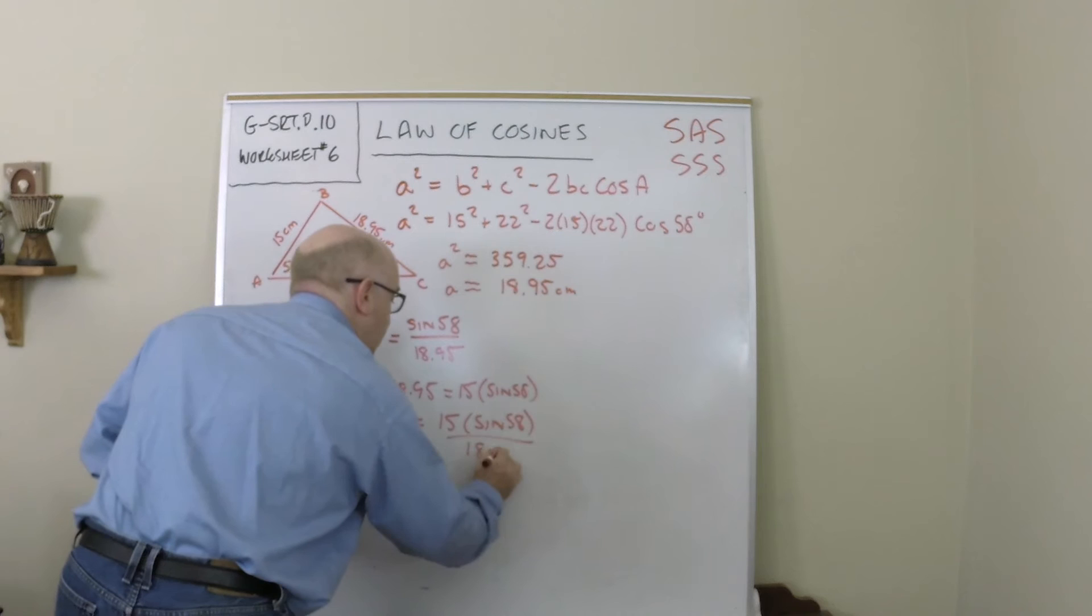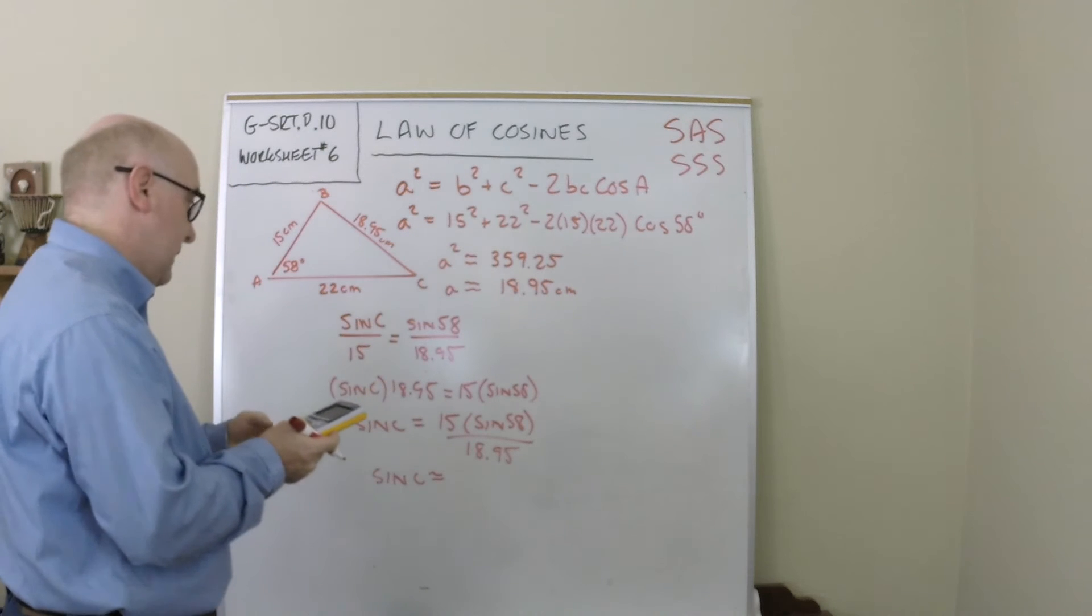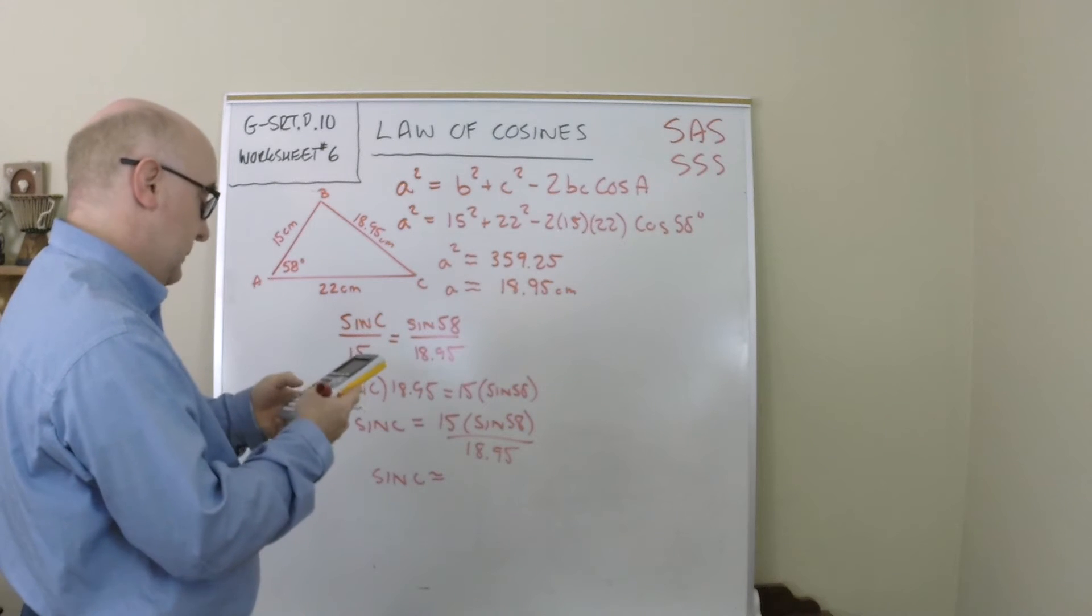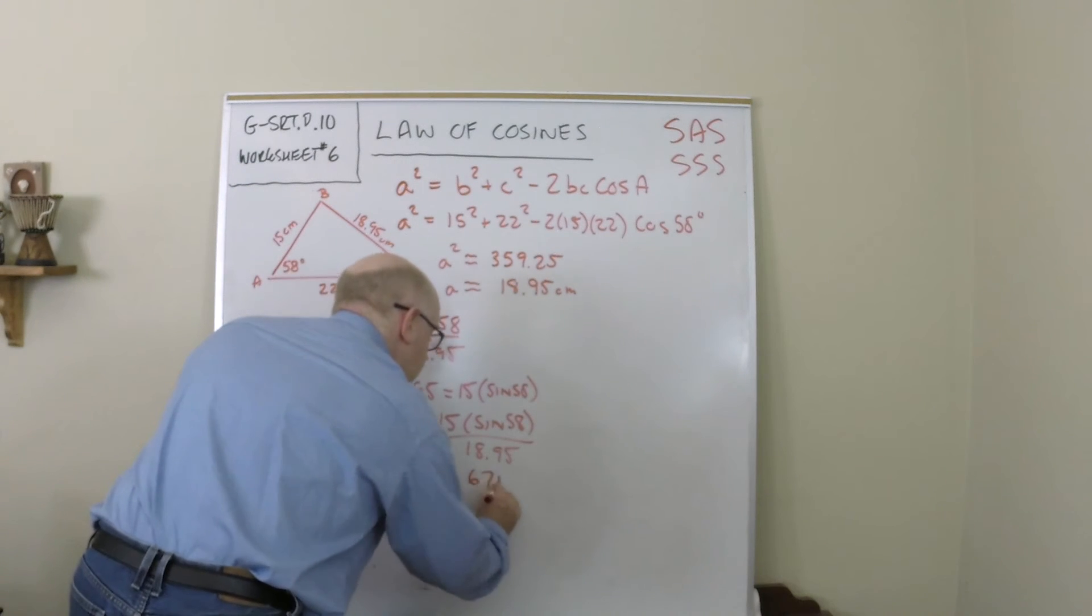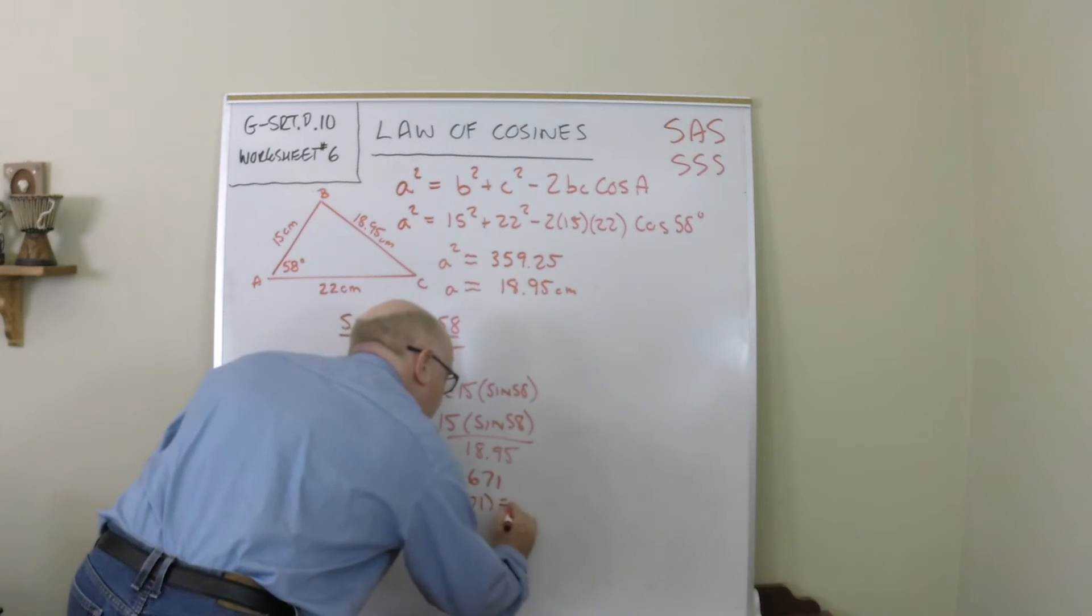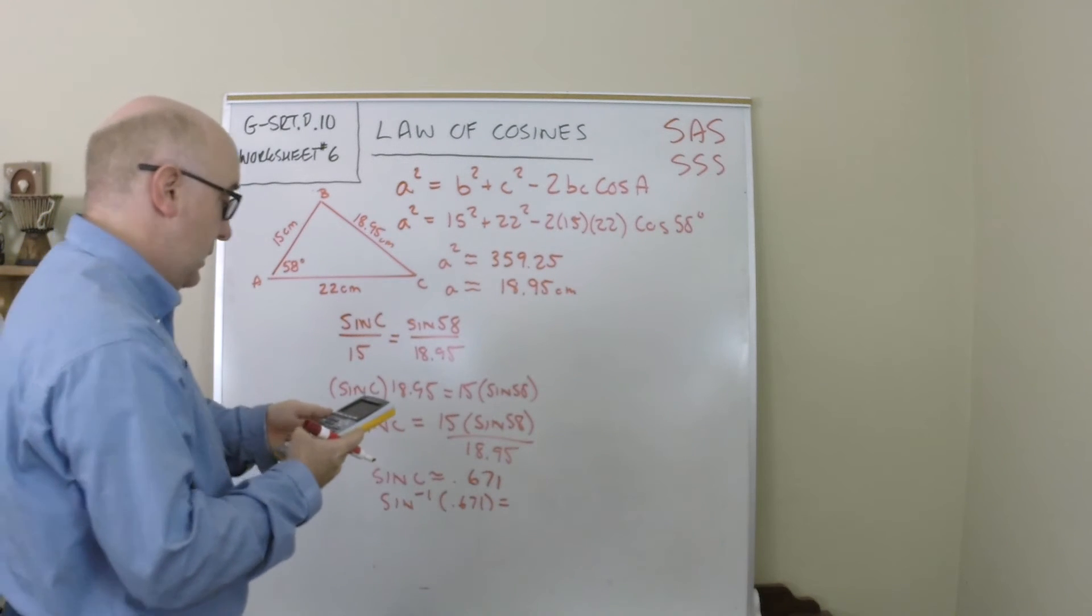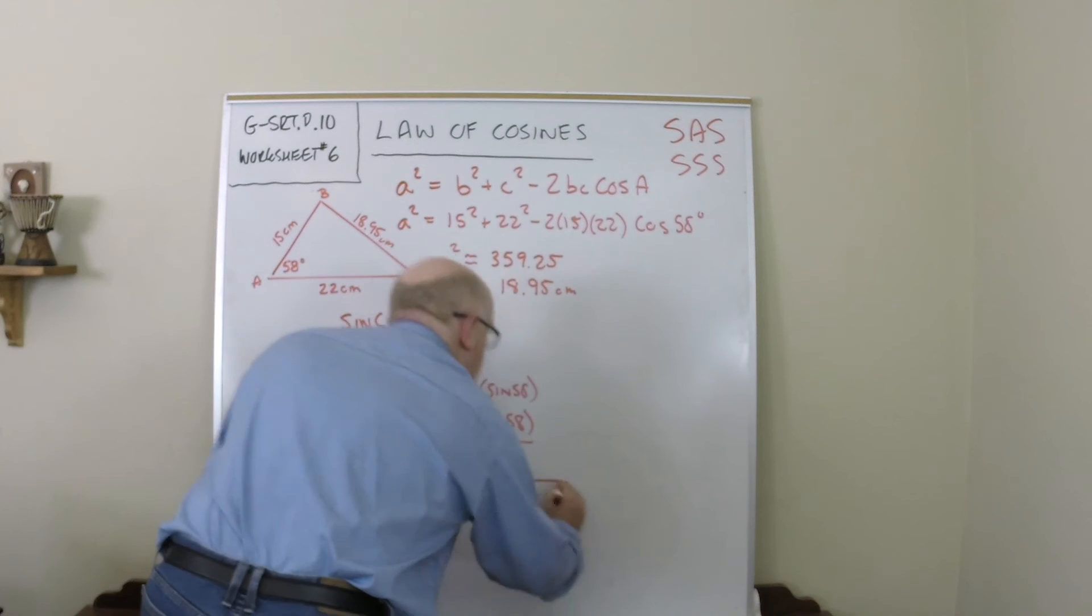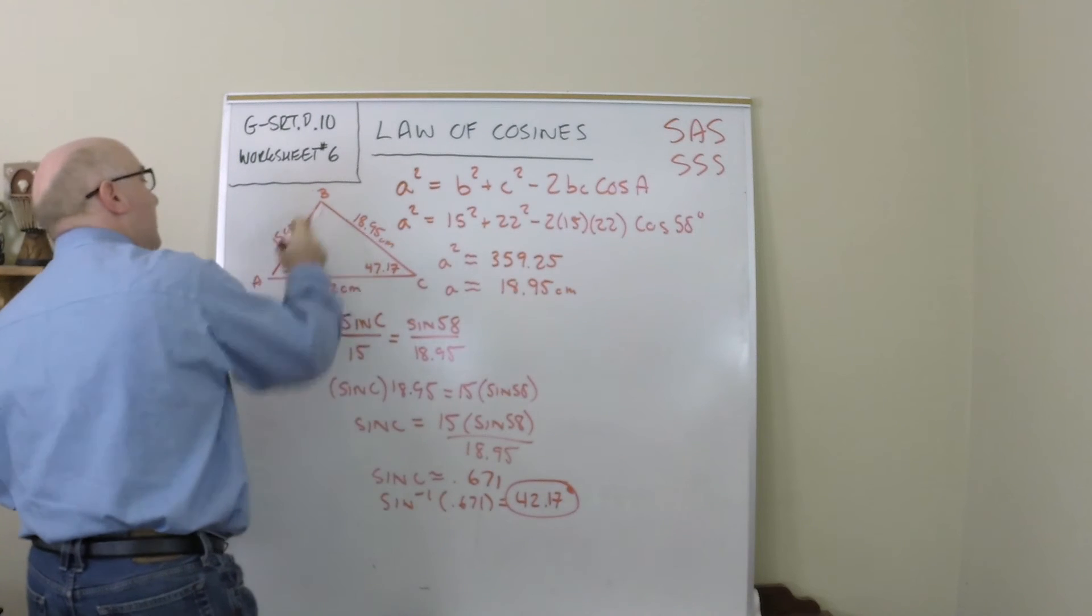And we get that the sine of C is approximately, let's find its value, 15 times the sine of 58 divided by 18.95, it's approximately 0.671. And so I do the inverse of that ratio to obtain my angle and I find out I'm looking at a 42.17 degree angle.